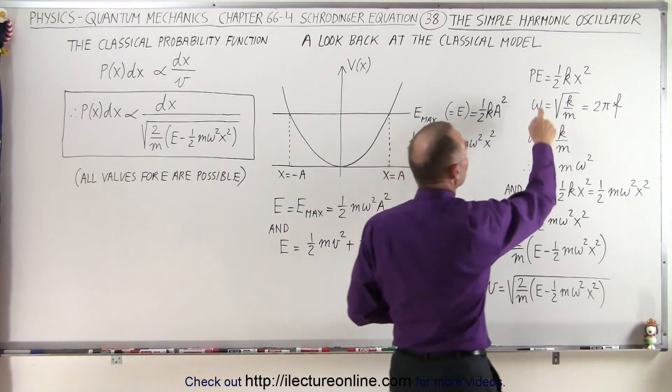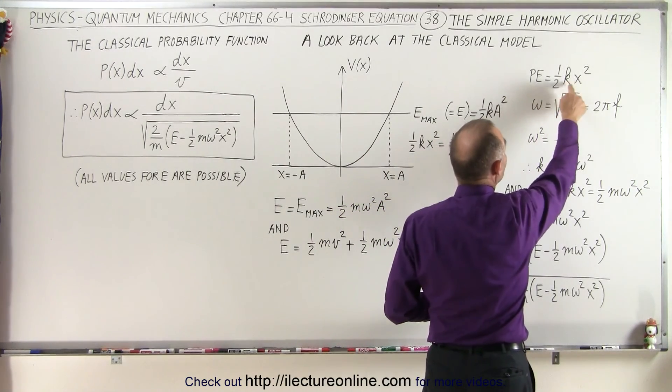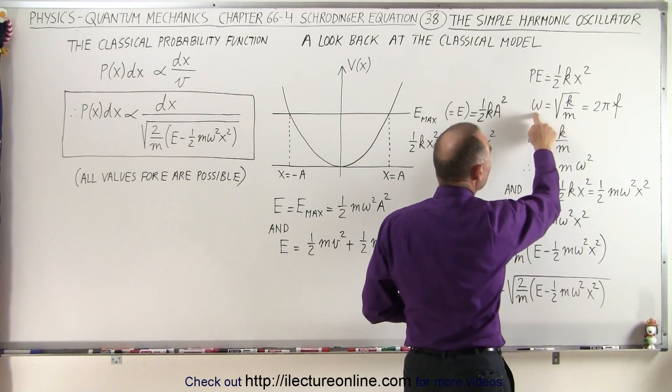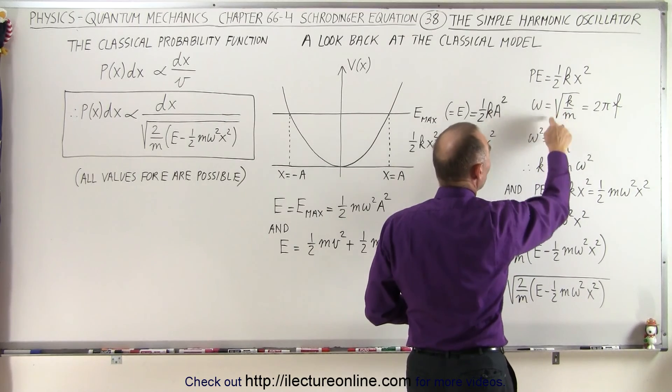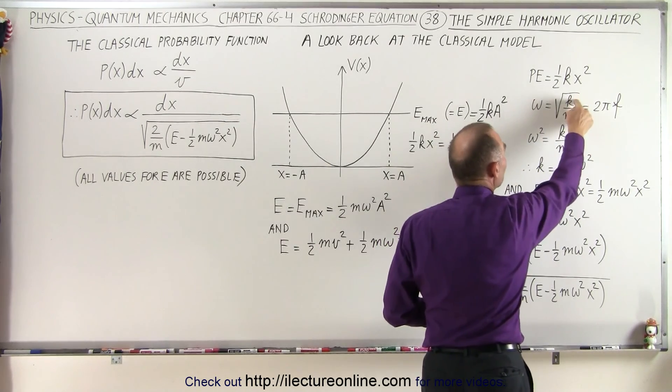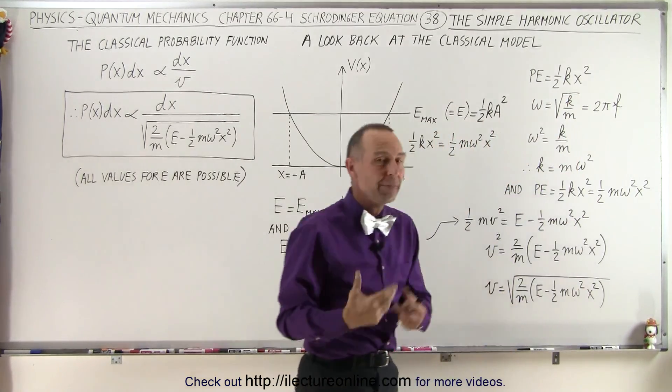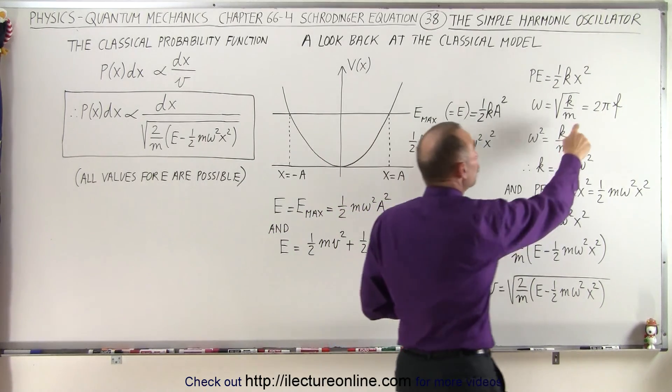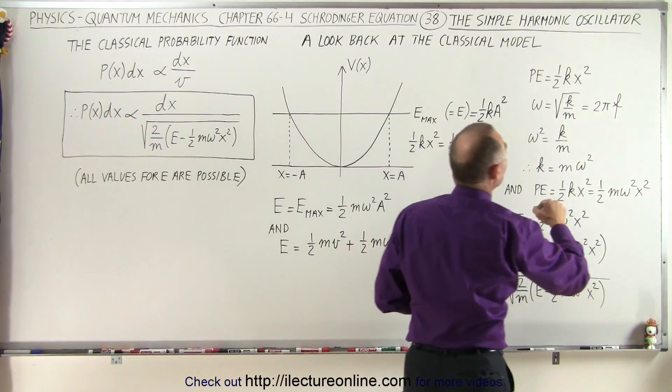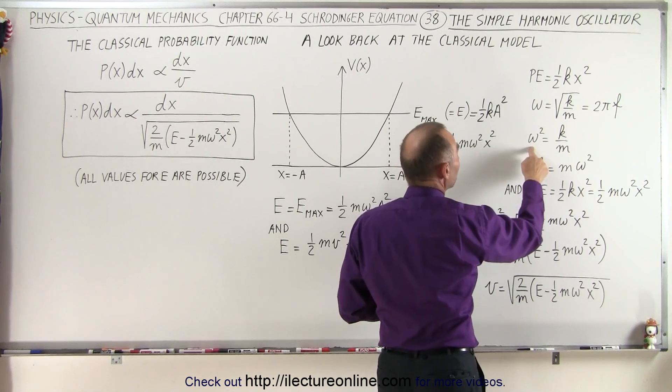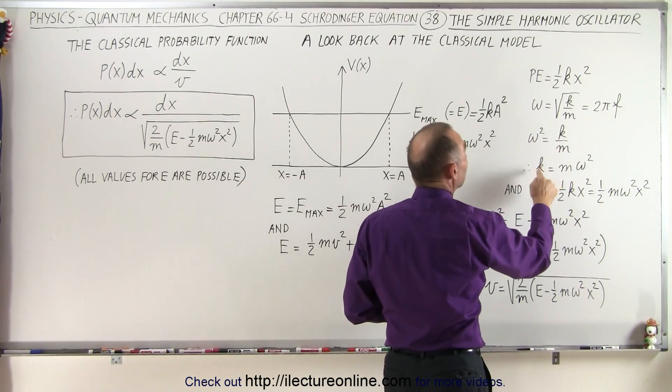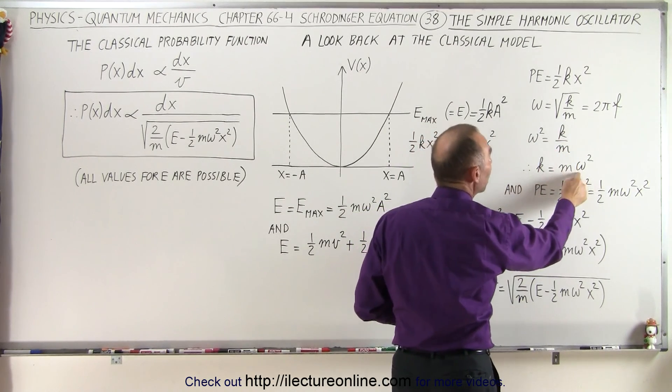k being the spring constant, and m being the mass, which also is equal to 2 pi times the frequency. Notice then omega squared can be written as k over m, or k can be written as m times omega squared.